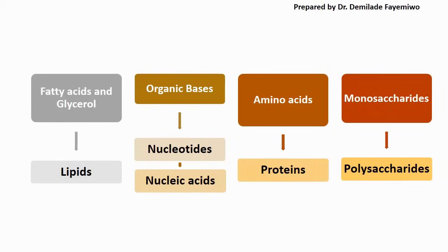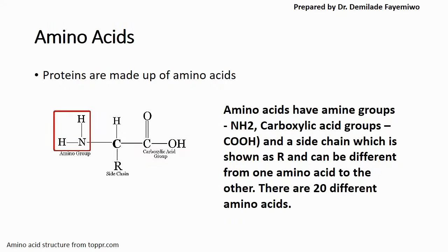I invite you to remember FOAM — a way to recall the monomers of the different polymers we are studying in this chapter. FOAM stands for fatty acids, organic bases, amino acids, and monosaccharides, which are the monomers of lipids, proteins, polysaccharides, and nucleic acids respectively. Nucleic acids are covered in a different chapter. Just like we saw, proteins are made up of amino acids, which means amino acids are the monomers used to form proteins.